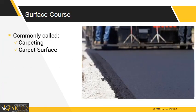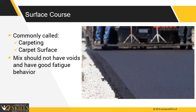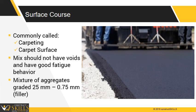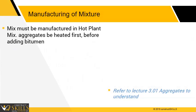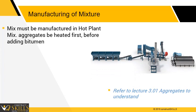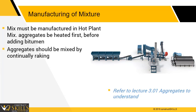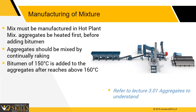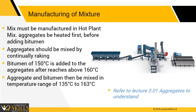Surface course is commonly called carpeting. The mix must be designed to have a low percentage of air voids and good fatigue behavior. It consists of a mixture of aggregates, typically less than 25 mm down to 0.75 mm. The mixture must be manufactured in a hot mix plant. In the hot mix plant, the aggregates should be heated first before adding bitumen; aggregates should be continually raked to ensure thorough mixing and even heating. Once the temperature of the aggregate reaches above 160 degrees Celsius, heated bitumen at 150 degrees Celsius is added. The mixing should take place in an unheated frame, and the aggregate and bitumen should be thoroughly mixed within the temperature range of 135 to 163 degrees Celsius, then transferred to dumpsters for hauling.